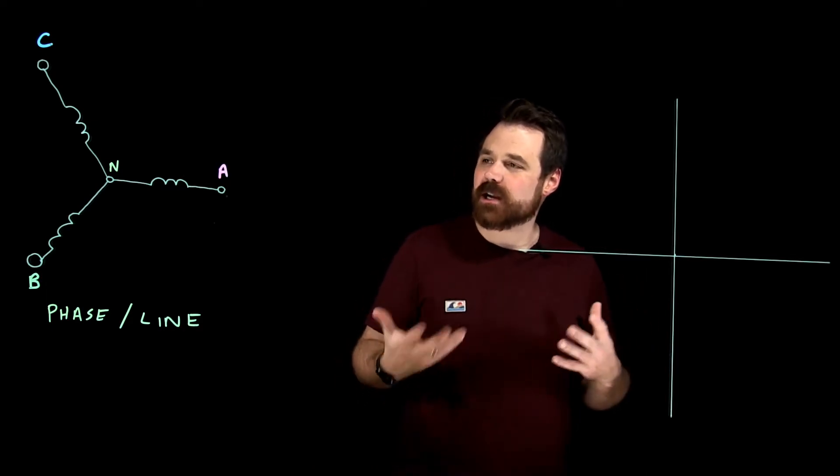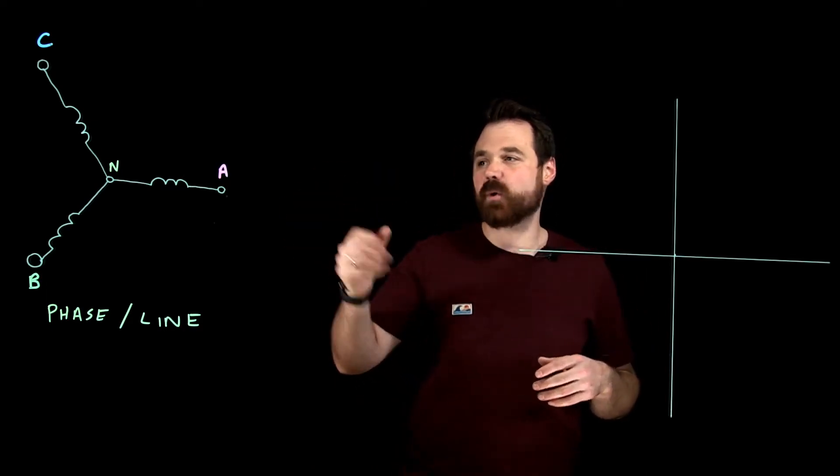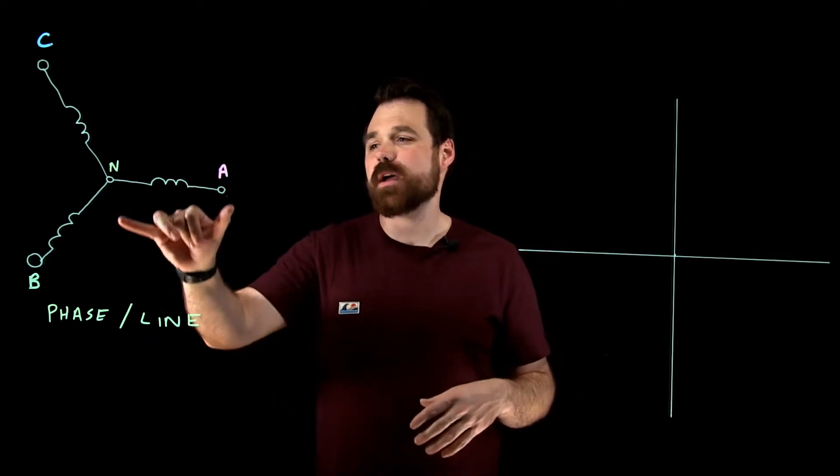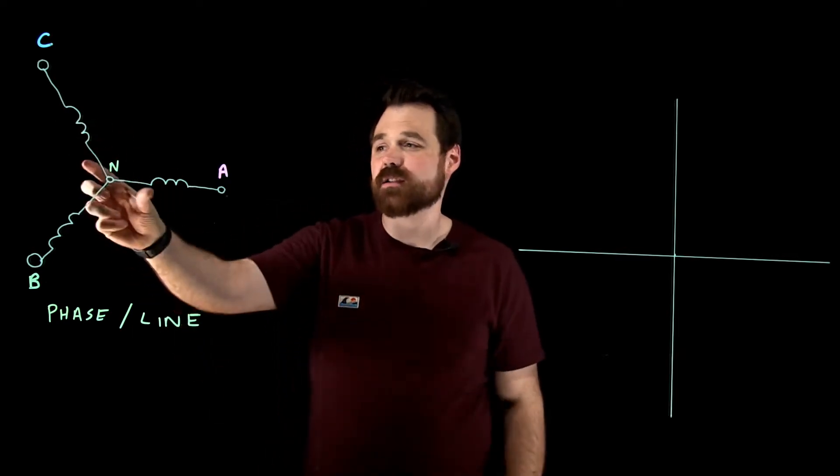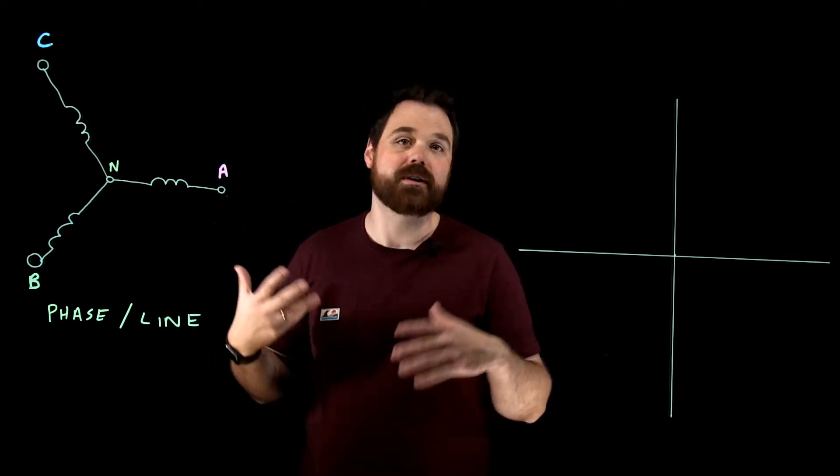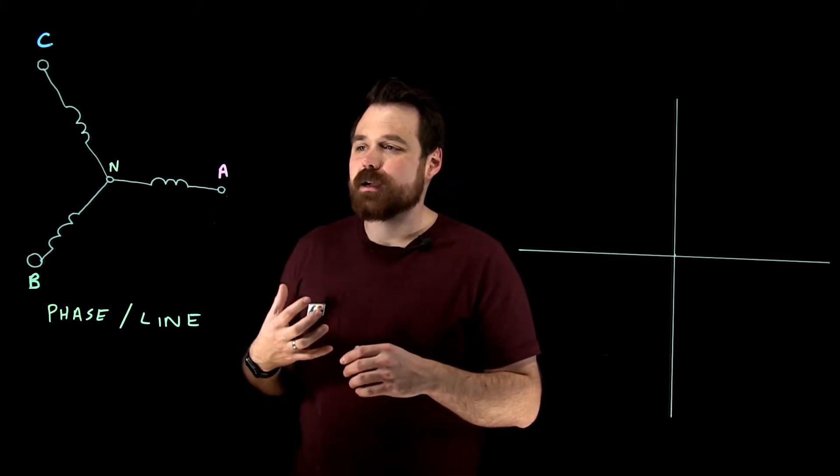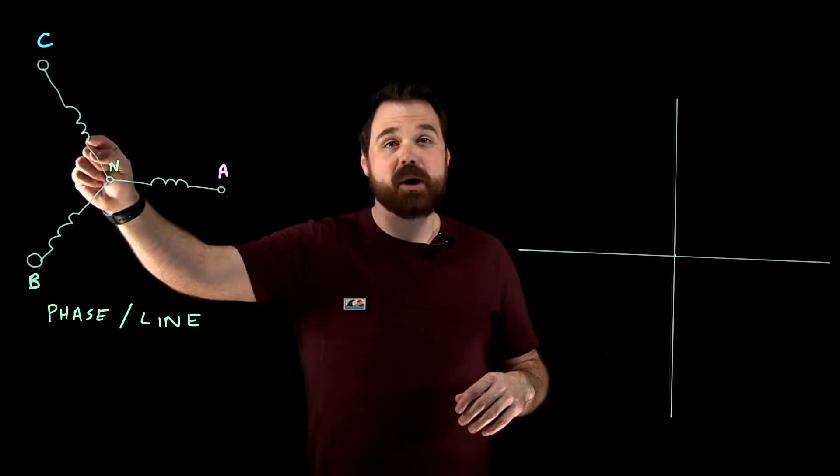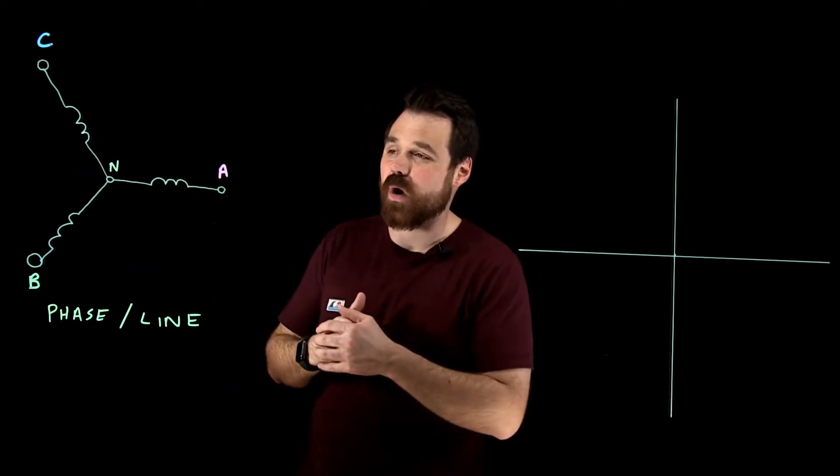What I want to discuss is the Y-connected voltage relationships. How a Y-connected circuit works is we have three individual phases and they are all connected to a common point, which we call a star point or a Y point or a neutral point. They're all exactly 120 degrees apart from each other. So that gives us our Y-connection.